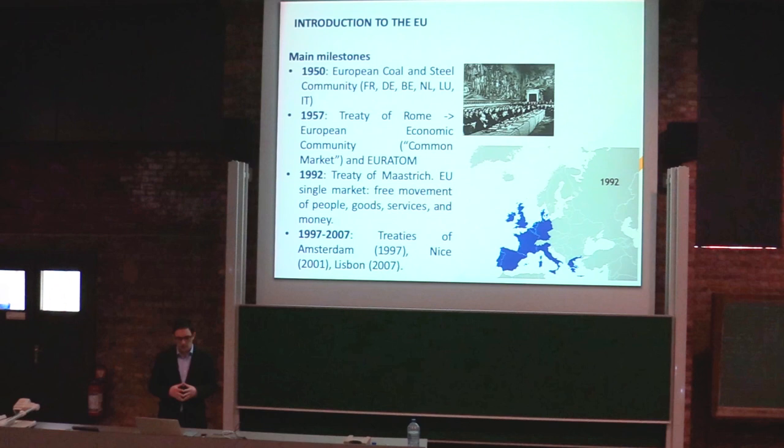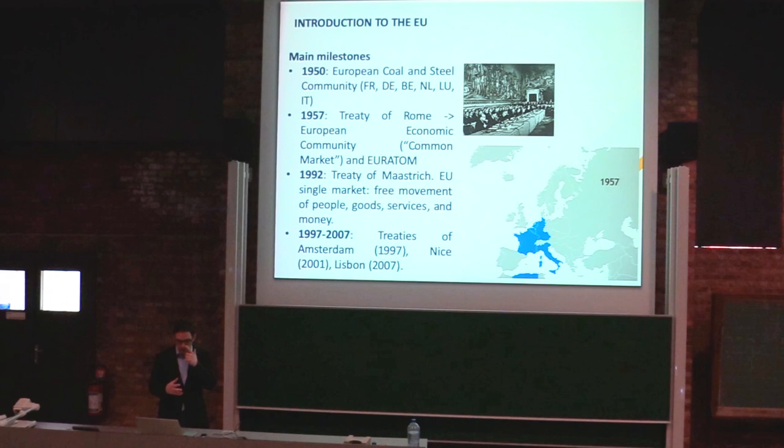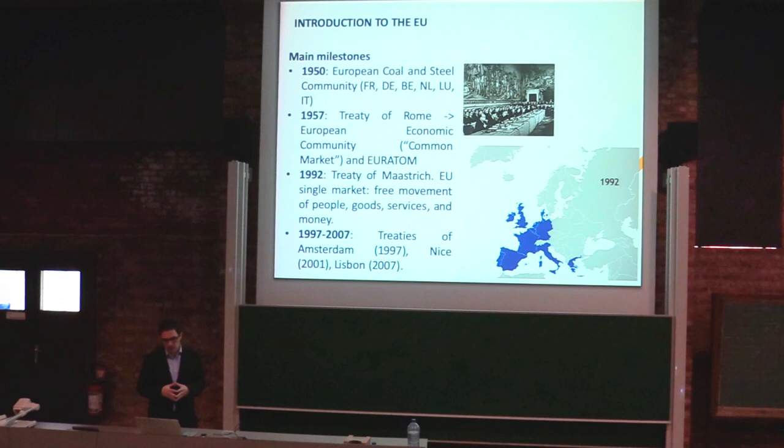There was also Euratom — an agreement to manage nuclear and atomic energy. Then many treaties followed: the Treaty of Maastricht, which defined the European Union close to what it is now, including the free movement of people, goods, services, and money; the Treaty of Amsterdam; the Treaty of Nice; and the Treaty of Lisbon.